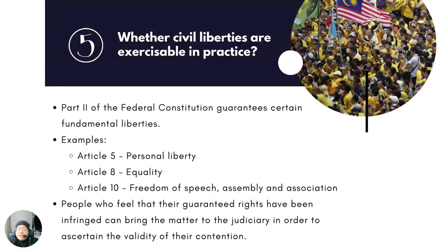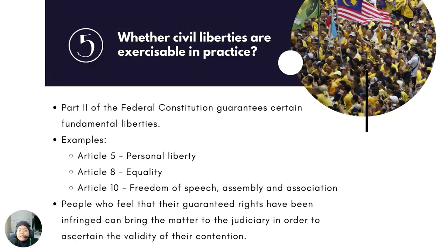Last but not least, the fifth question to be asked is whether civil liberties are exercisable in practice. This is a slightly more sensitive question, as the manner in which human rights are treated in the country must be taken into consideration. By looking at the Federal Constitution, certain basic fundamental liberties are guaranteed to all living in the country, of course with several exceptions and limitations, as seen in Part 2. Some of these fundamental liberties guaranteed are personal liberty under Article 5, equality under Article 8, and freedom of speech, assembly, and association under Article 10. Human rights activist groups may not say that Malaysia has the best track record. However, there is a solution for people who feel their guaranteed rights have been infringed — bringing the matter to the courts. Generally, these civil liberties are exercisable, though it ultimately depends on how the government enforces and limits them, which at times may be seen as oppressive.